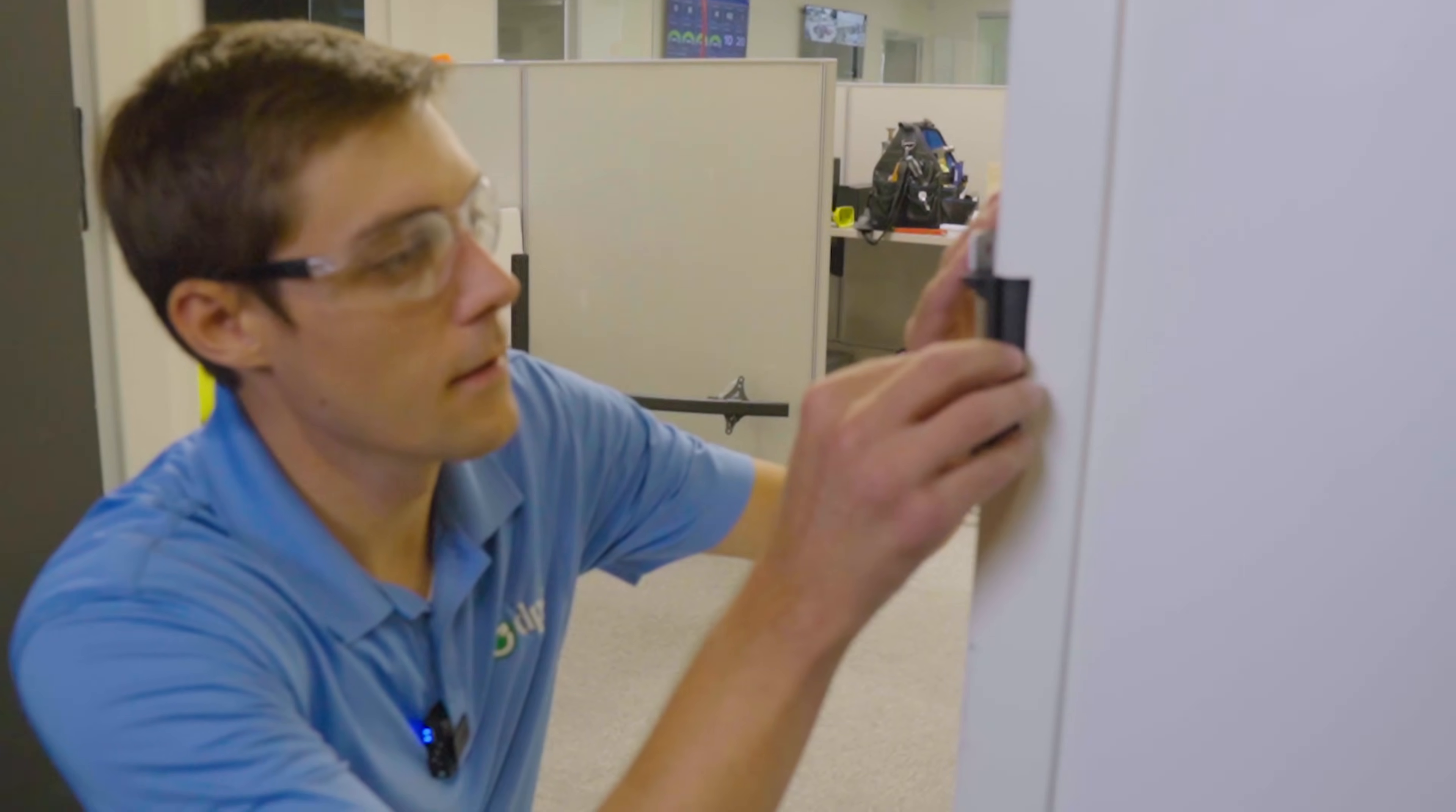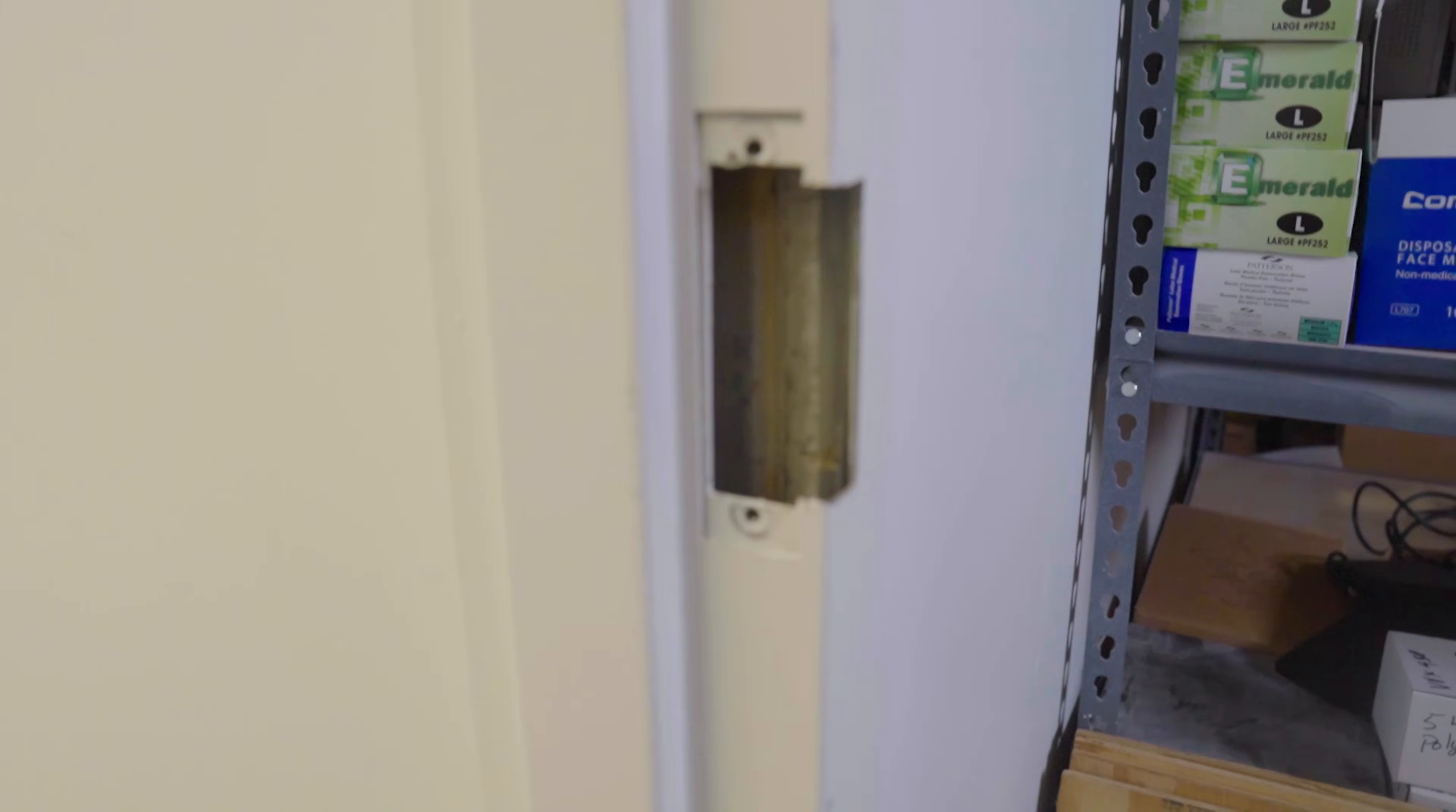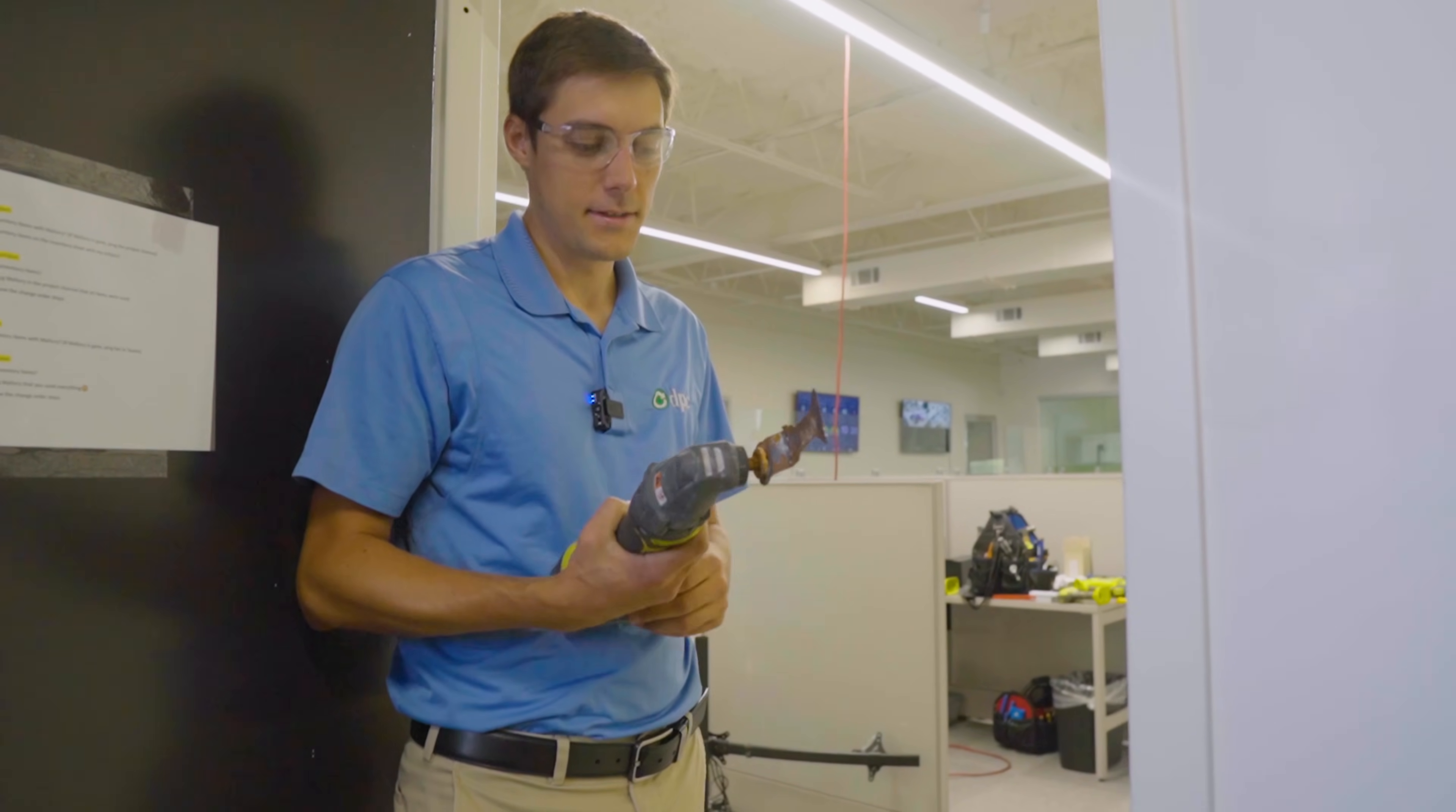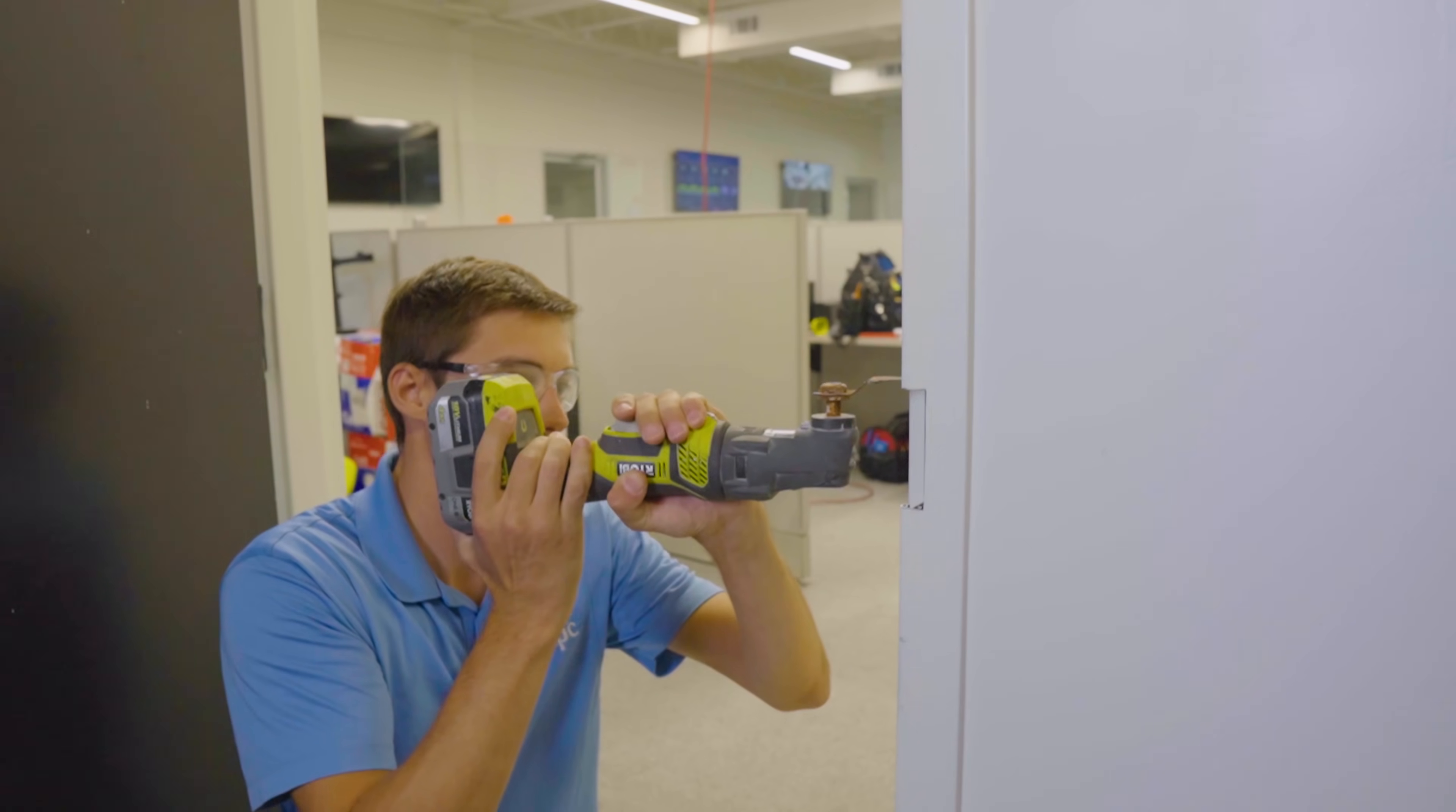I'm just going to shave some of the edges off so they're not sharp on the outside. Alright, let's see what that looks like. Close. And now we got the next problem. I'm hitting the wood on the door frame, so now I need to cut into the door frame. This multi tool is going to be the easiest way to get back behind the door frame here and cut out the holes I need in the wood.